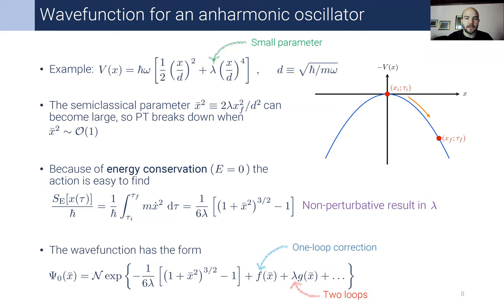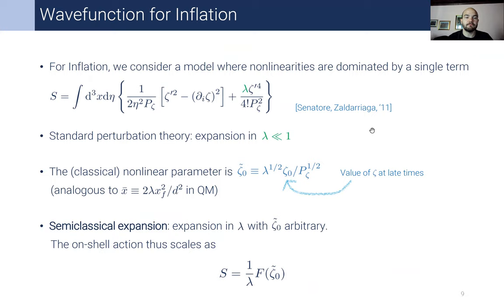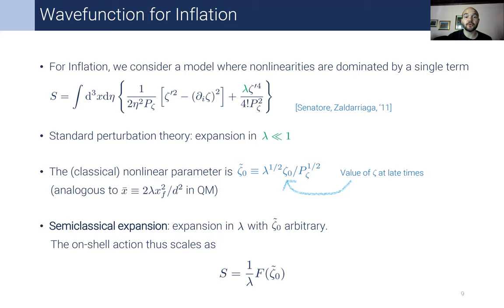Now we move to the case of inflation, where the story is very similar. We specify a model for the perturbation zeta with the usual quadratic part in the action and add a nonlinear interaction depending on derivatives of zeta, with small coupling lambda. This model was introduced in a previous paper. It is relatively simple, allowing both analytic estimates and numerical studies. Furthermore, it contains derivative interactions of zeta that die off at late times and are relevant basically only at horizon crossing, which simplifies the analysis.